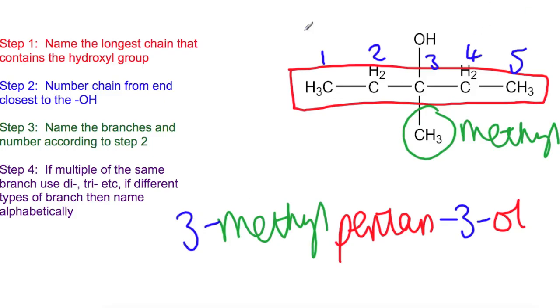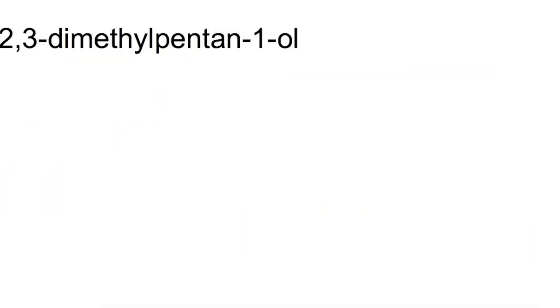So that's how we name the molecules that you're given as diagrams. Now we're going to have a look at changing from the name into the structure. Just like we would have with branched chain alkanes we're going to work from the end of the structure forwards. So here at the end of the structure we've got pentan. So that tells us we must have five carbons in a row. So we're just going to draw out those five carbons.